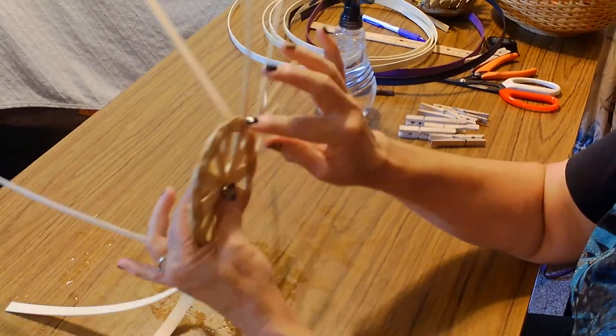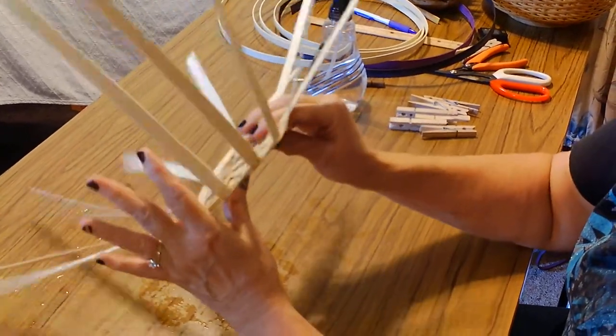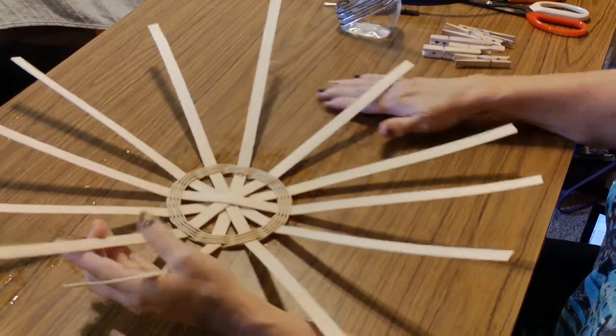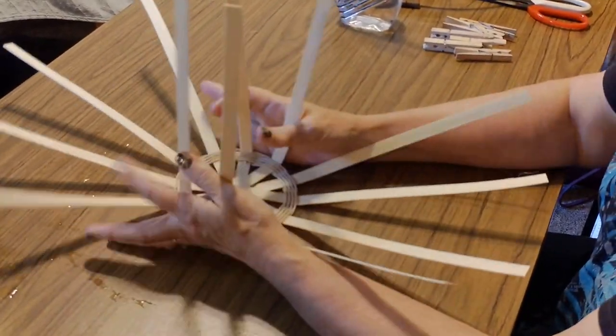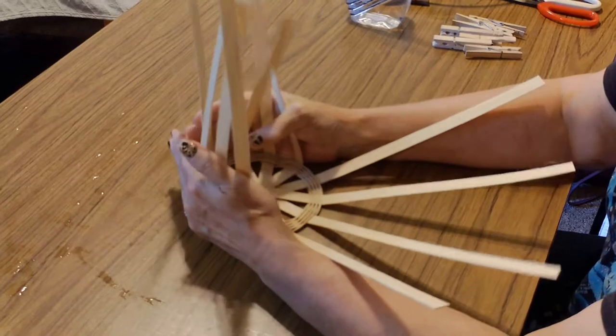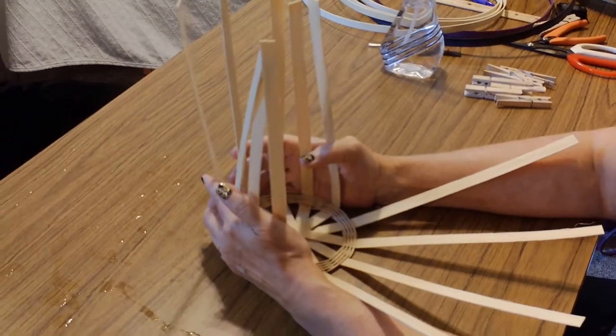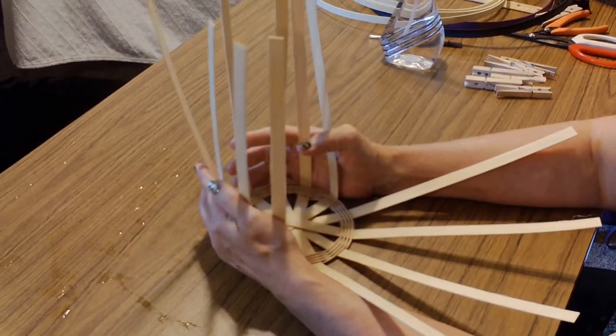So you do this all the way around and then it doesn't stay, but it at least gets an idea that when the basket is woven, it's going to be forming the sides like this. And so in the next segment, we will actually start weaving the first two rows.